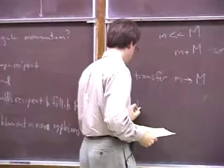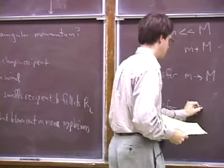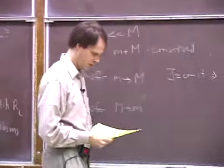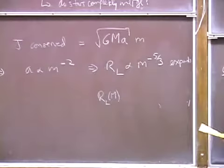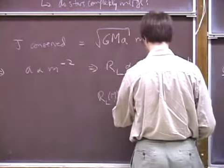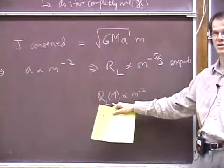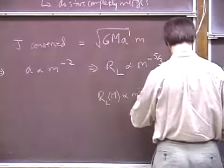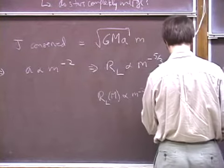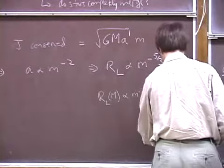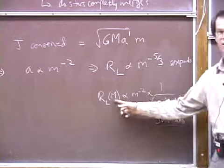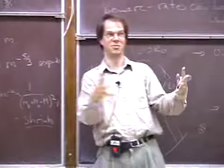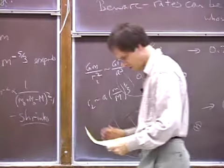Now suppose instead we transfer from the heavy star to the light one. With J constant, a ∝ m^{-2} again, but now it's the big one losing mass. The Roche lobe of the big star shrinks fast — proportional to (m_0 + m_0 - Δm)^{-2} — so it's shrinking rapidly. Taking a little mass off the big star and putting it on the small one causes the orbit to shrink, making the big star overflow its Roche lobe even more. That sounds like a recipe for instability.